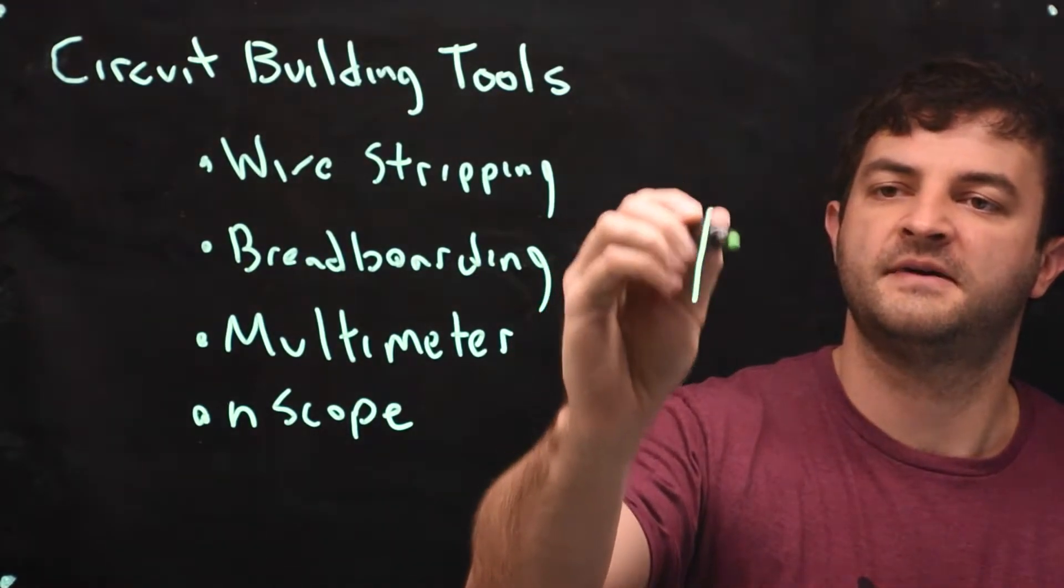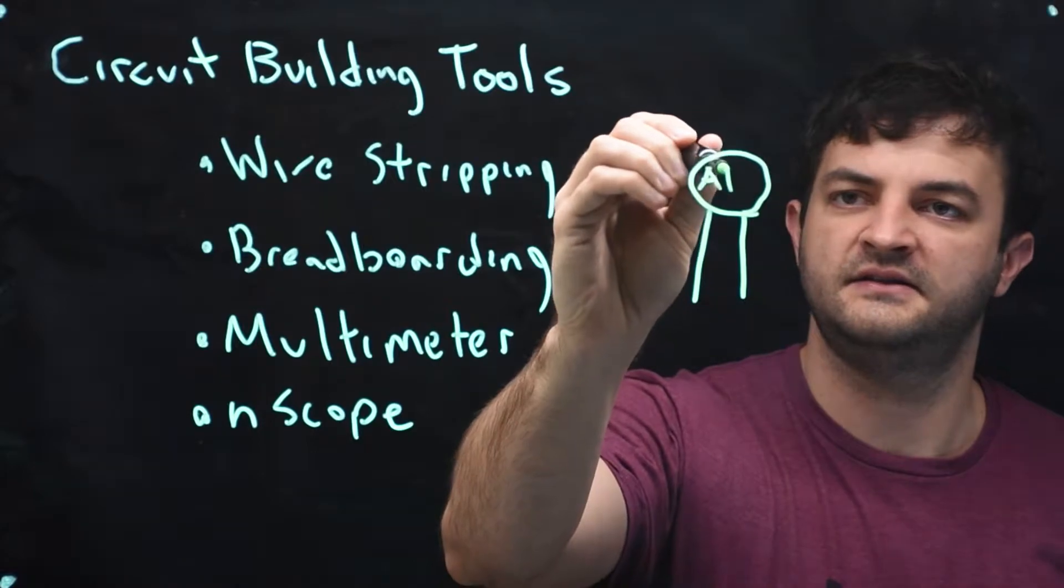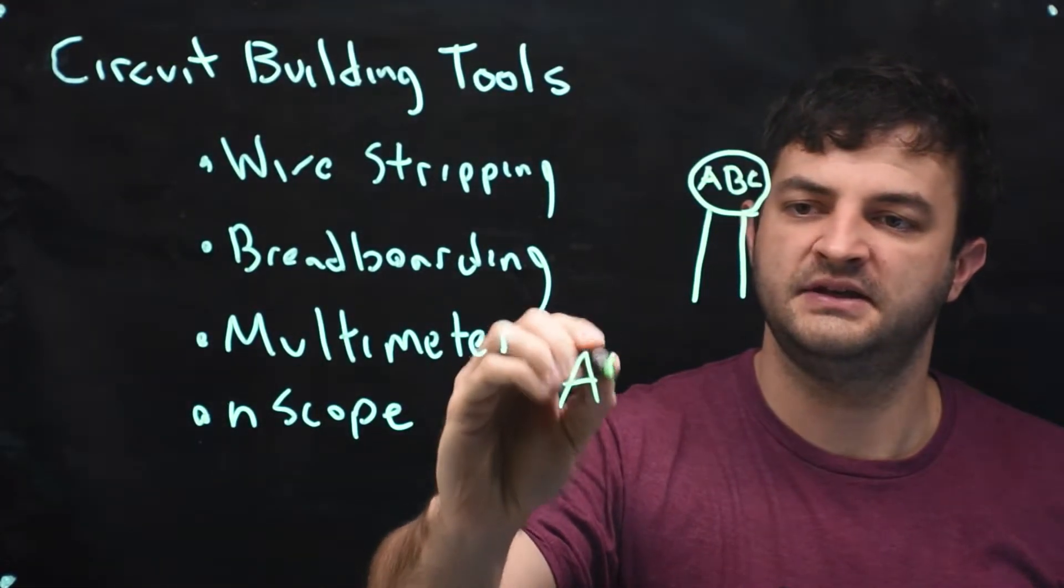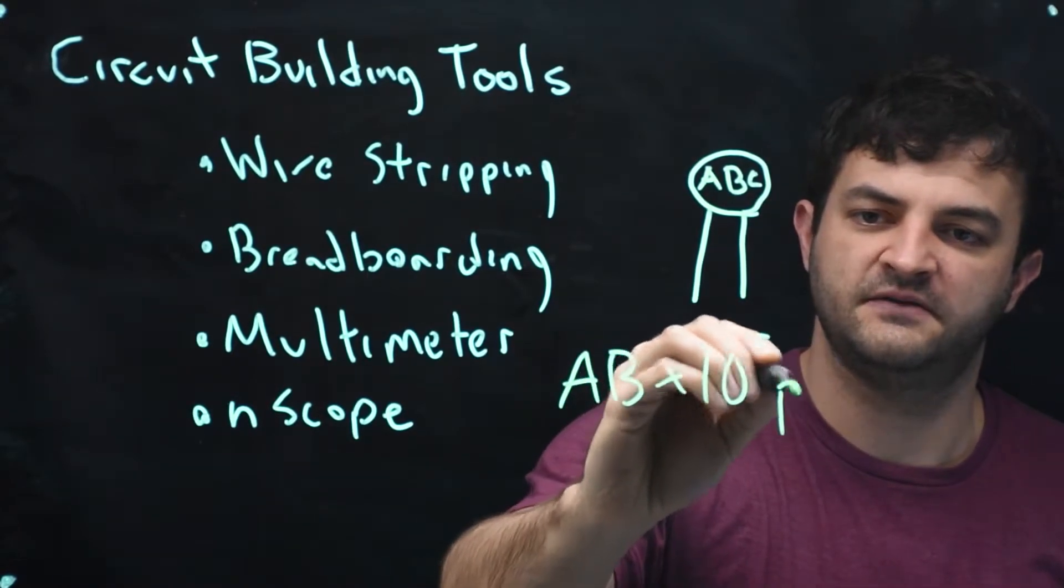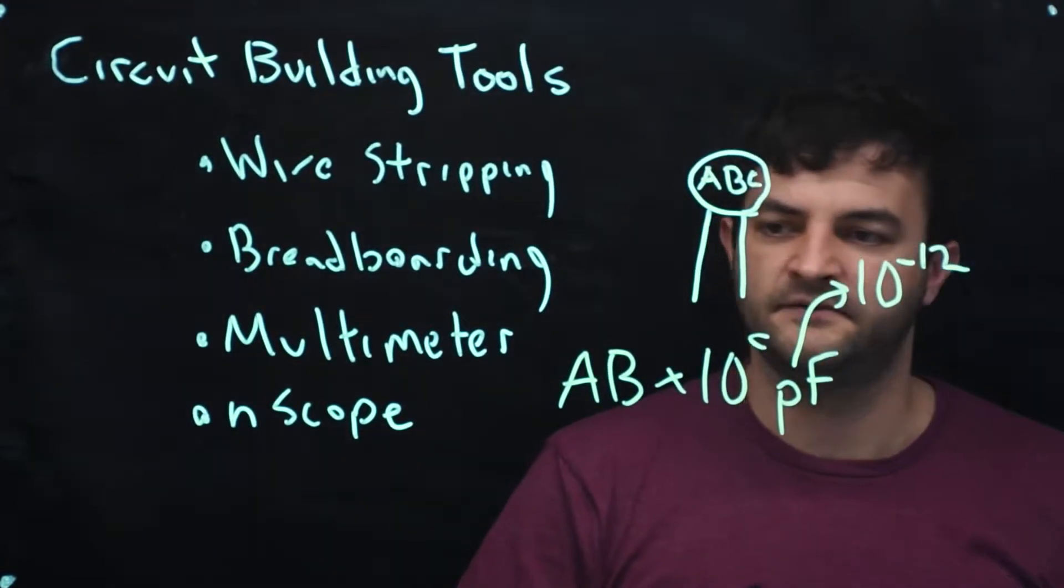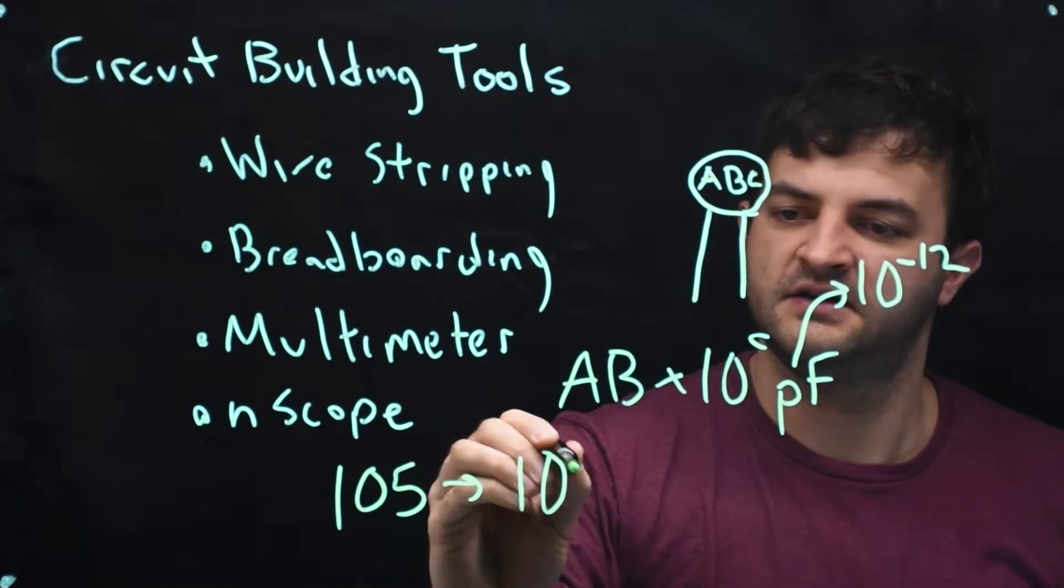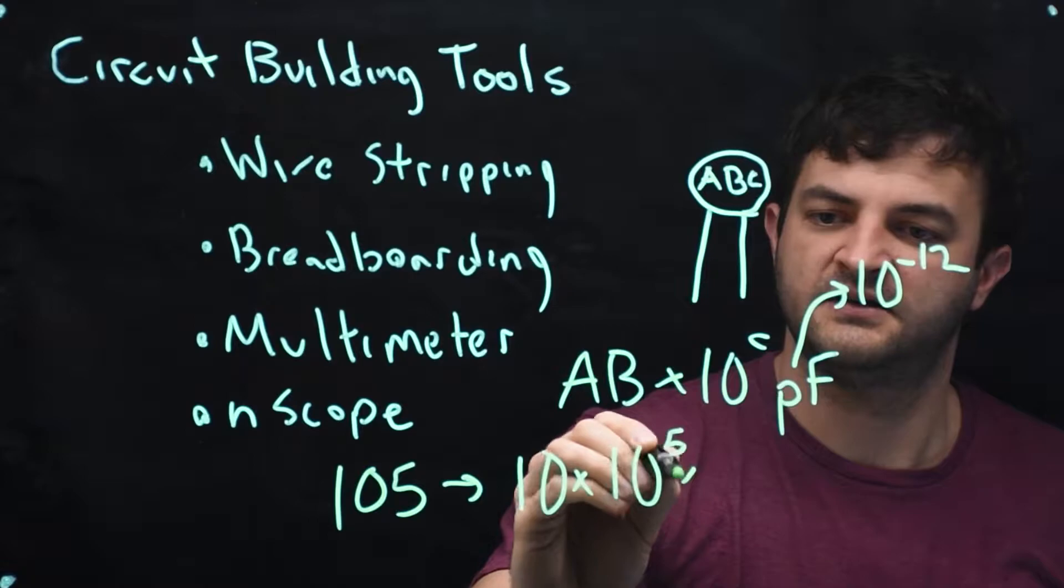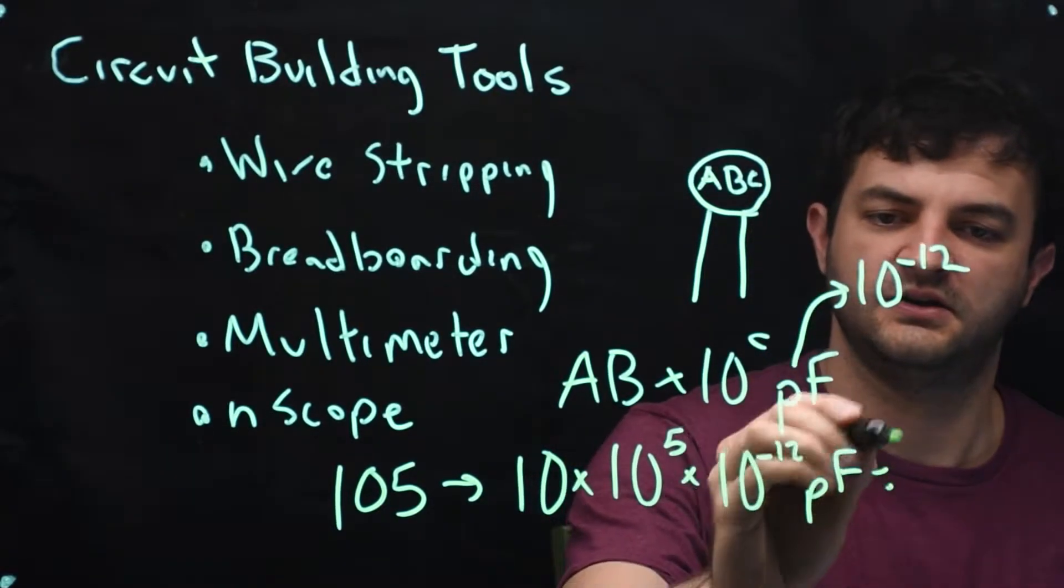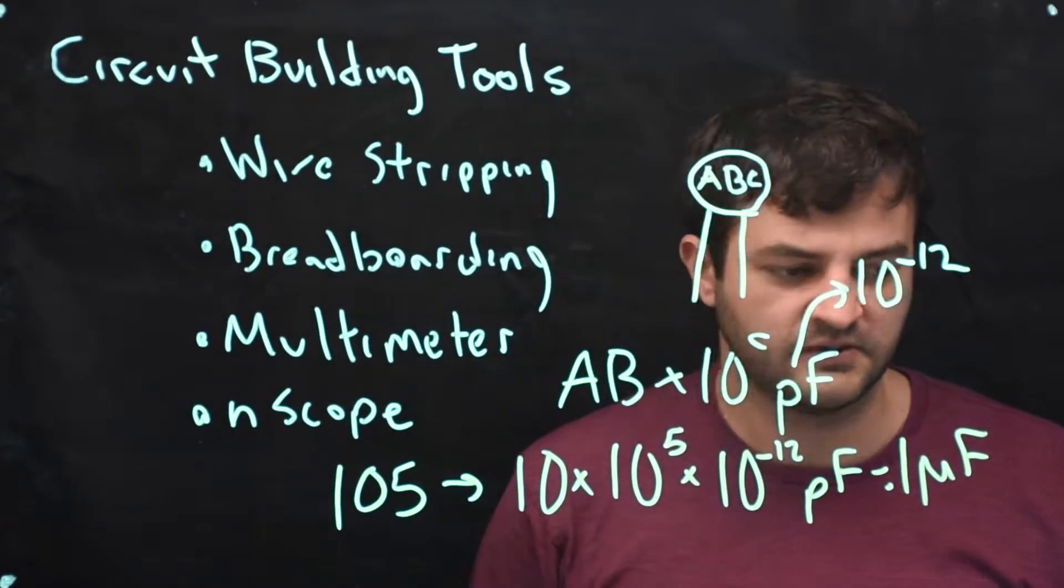So when you look at your capacitor, capacitors typically have two little legs and a circle on them. The circle will have three numbers on it: A, B, C. And so how do you interpret the value based on A, B, C? The value is AB times 10 to the C picofarads. Picofarads is 10 to the minus 12. So for example, a 105 capacitor translates to 10 times 10 to the 5 times 10 to the minus 12 picofarads. And when you do that math, this comes up to be one microfarad. So those letters are real tiny, so get real close and squint to look at those capacitors.